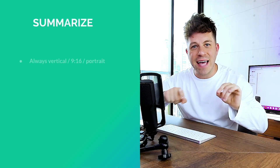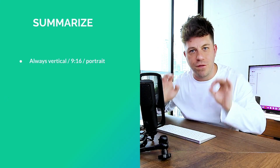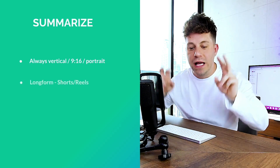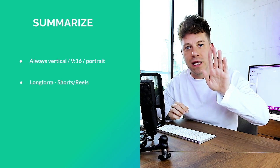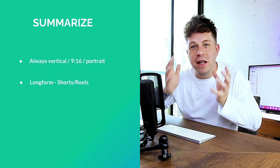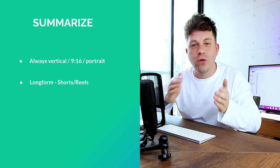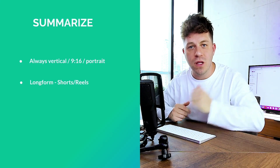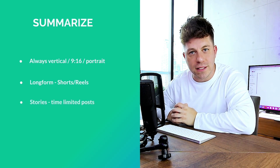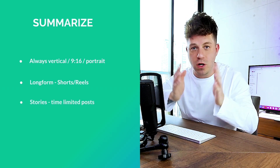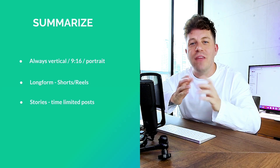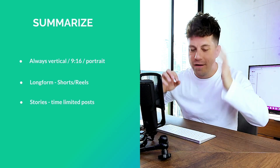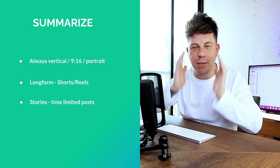To summarize: we're talking about 9:16 format — we'll probably refer to this as vertical, occasionally portrait. We're covering both long-form verticals — up to one minute, permanently staying on your channel, we call these shorts or reels — and also stories, probably up to 60 seconds or so depending on what Phil decides, which last only a limited time on your channel: 24 hours or 7 days depending on platform.